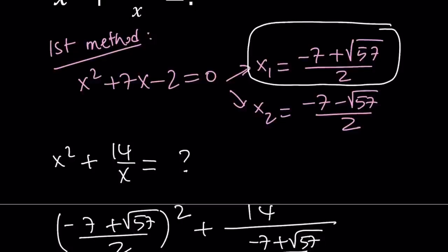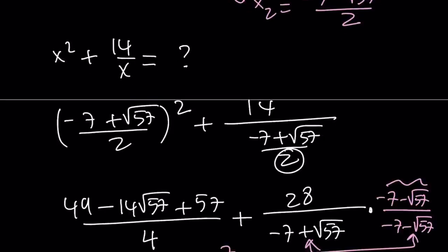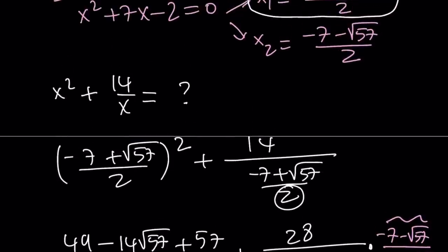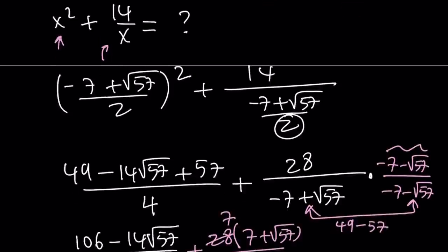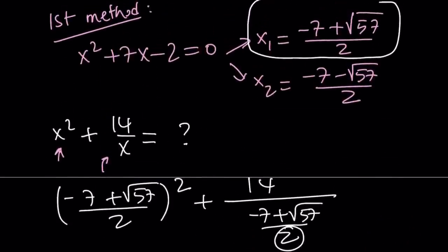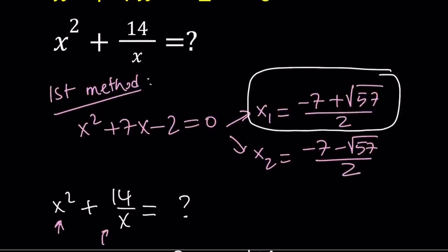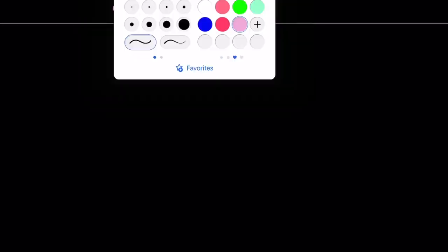What happens if you use x sub 2? You can go ahead and test it out. When you replace x with x sub 2, you're going to get a different square here and a different answer here. They're just going to balance out. Are you going to get the same answer if you plug in x sub 2, or do you get a different answer? Is it possible that with our second method, we're going to find two different answers? Let's go ahead and take a look at the second method.